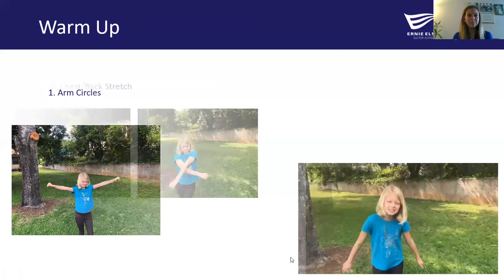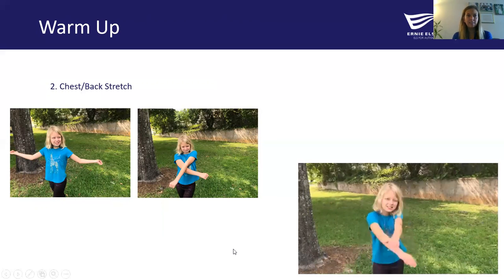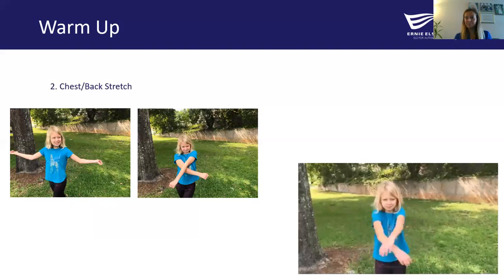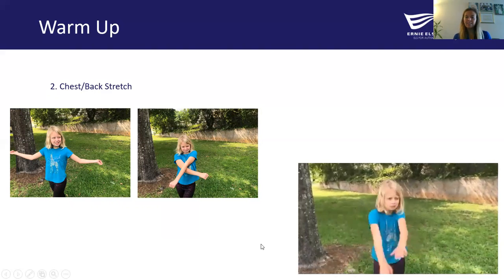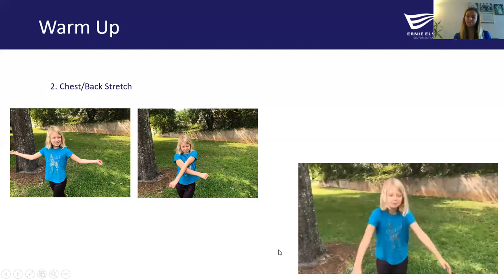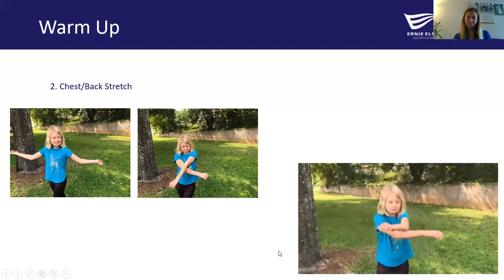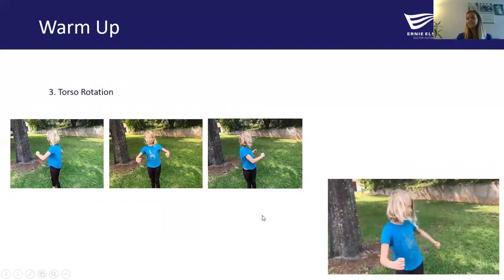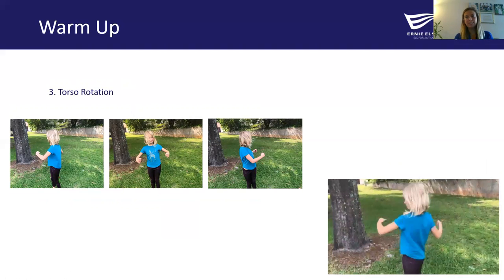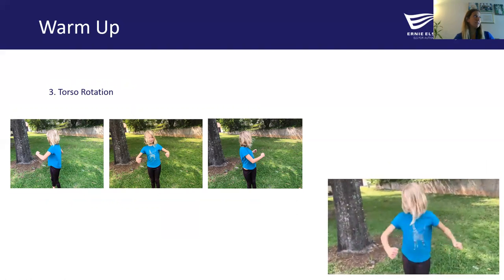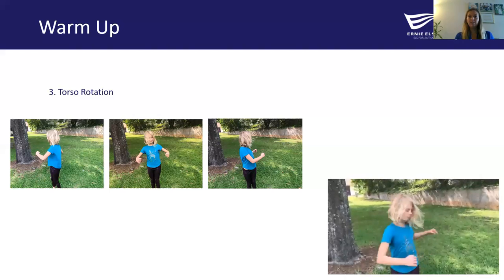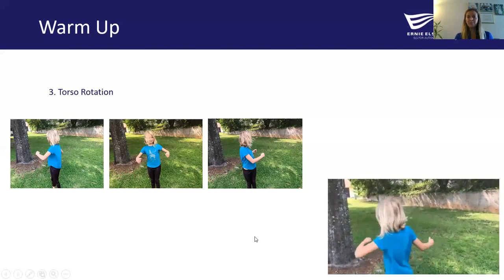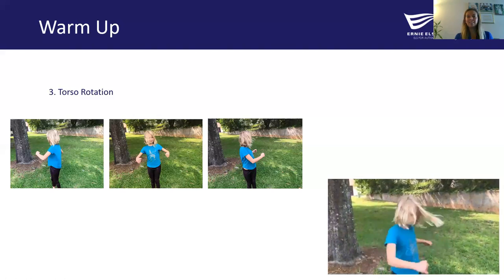After you've done your arm circles, you can do your chest and back stretch — opening and closing the chest. You want to do these exercises for about 30 seconds each. Nice big hug to yourself. Our third warm-up exercise is our torso rotation: feet should be about shoulder width apart, hips stay straight, and we're just rotating that middle section of our body — the torso, the abdomen — going from side to side. We're just letting our body know we're getting ready to do some activity.